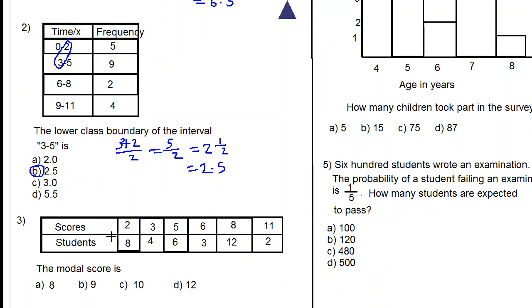B is our answer. Let's move on to number 3. The modal score - we are looking for the most popular score, the score which has the most number of students. That answer is 8 because it has 12 students. The modal score is 8, that is A.